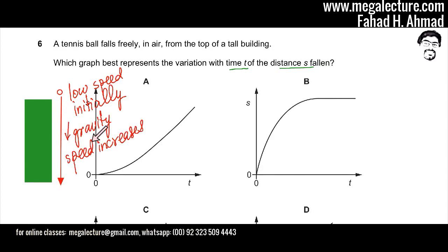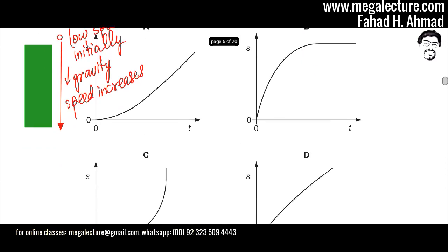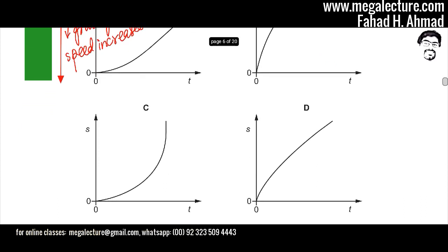As speed increases, more distance would be covered. So initially, lesser distance would be covered. But as it travels and its speed increases due to gravity, greater distance would be covered. So the graph is going to look something like option C.